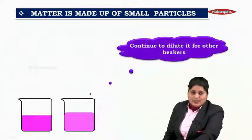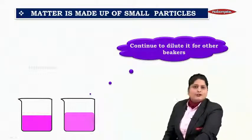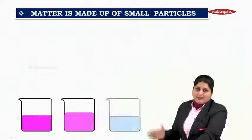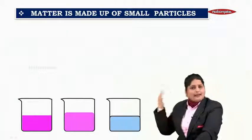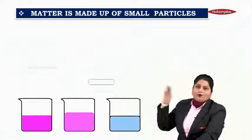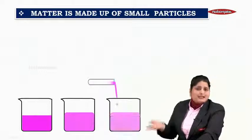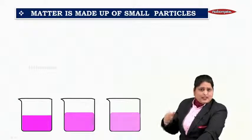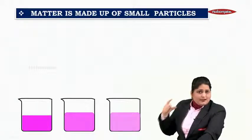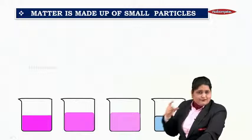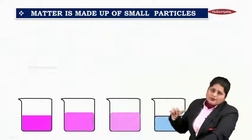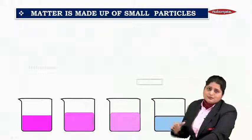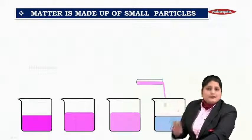Next, what you will be doing? Continue to dilute it for other beakers. So we continue to do the same thing. Take 10 ml from previous beaker and add the same quantity into the third beaker. Let's do it for the fourth time. You take 10 ml of solution from beaker number 3 and transfer it in beaker number 4.